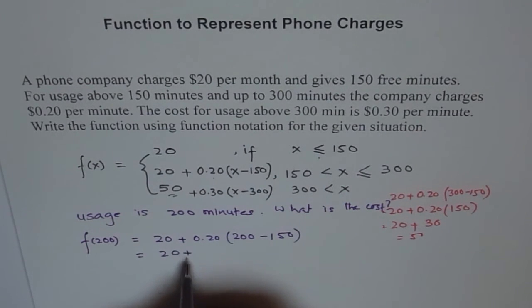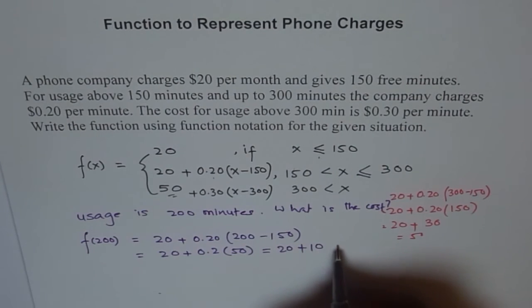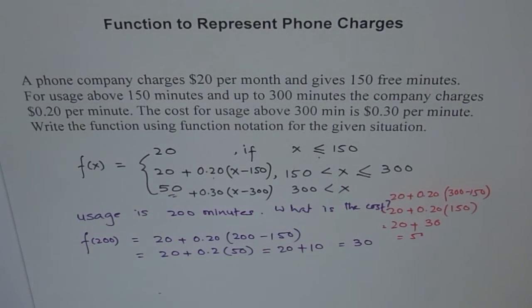Which will be 20 plus 0.2, and 200 minus 150 is 50. And which is 20 plus 0.2, that means times 10 is 2, and then times, you get $10, so which is $30. So this is the cost.